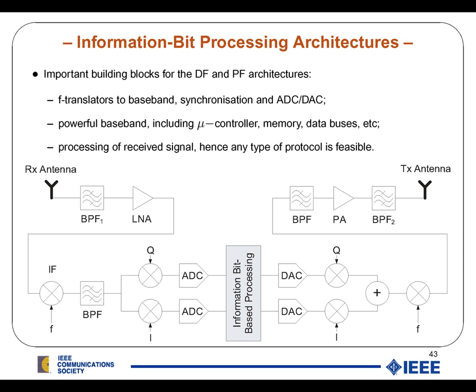For the information bit processing architectures, they go one step further and actually decode the information — these are the Decode and Forward and Purge and Forward architectures. Again, you need good frequency translators, good synchronization, and good ADC and DAC blocks. You also need a fairly powerful baseband including a microcontroller, as well as memory and data buses. With these architectures, you can again implement any type of protocol.